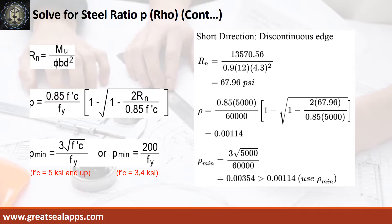Given short direction, discontinuous edge moment equals 13,570.56 inch-pounds. Resistance factor equals 0.9, b equals 12 inches, and d equals 4.3 inches. The beam design ratio RN equals 67.96 PSI, and reinforcement ratio rho equals 0.00114. Use rho minimum of 0.00354.